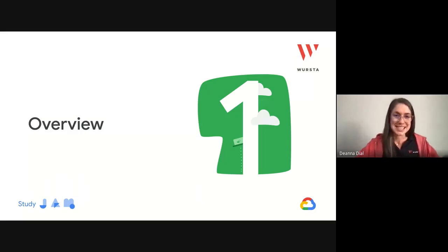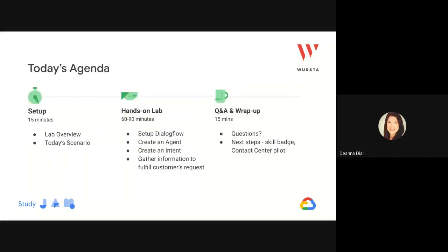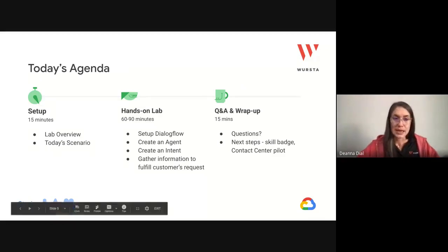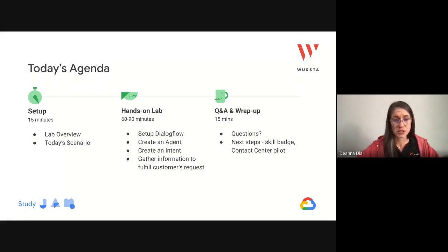So, overview of what we're going to be doing today: talking about conversational flows, and specifically a product offered by Google Cloud called Contact Center AI. We'll take a few minutes here at the top of the call to give you an overview and talk about today's scenario. We're going to pretend we all work as a travel agent. Then we've got an hour to an hour and a half for the lab itself. We'll start by setting up Dialogflow, create an agent, create an intent, and we'll round out this lab by completing an end-to-end flow where we also gather some information so that we can fulfill the customer's request as a chatbot. I will leave some time at the end to ask questions.